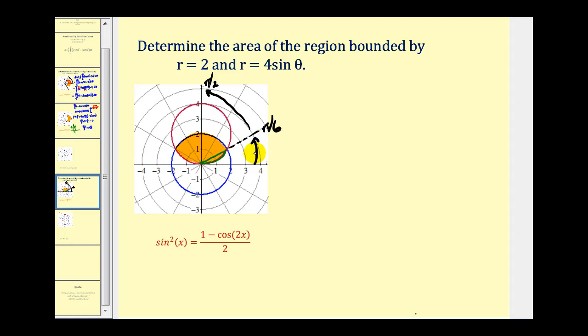But it will take two definite integrals to determine the area of the shaded region. So what I think we'll do is we'll find the area of half of this region and then double it to find the total area. So let's see if we can set this up. The area is going to equal two times one half, because we're doubling the area, times the definite integral from zero to pi over six of the red circle squared, which is four sine theta, plus two times one half, times the definite integral of two squared, d theta, from pi over six to pi over two.